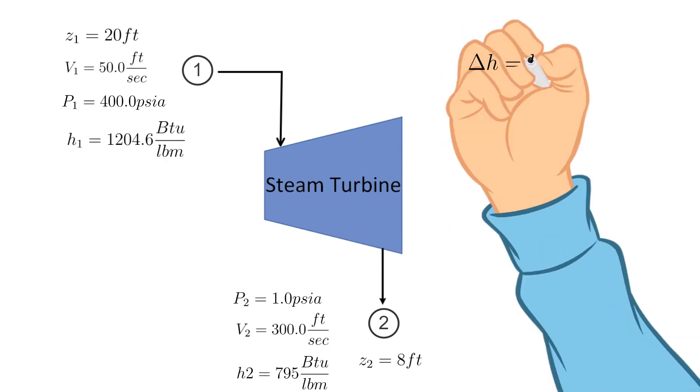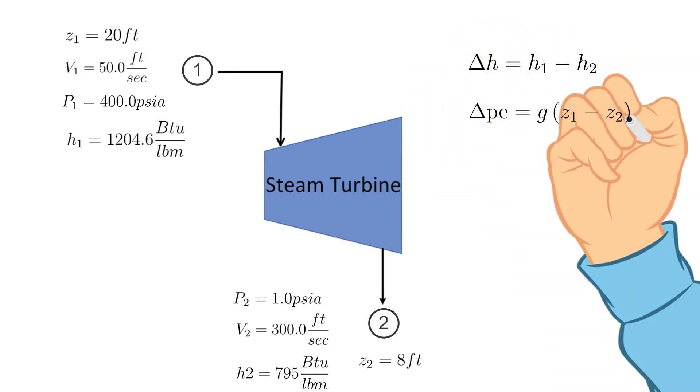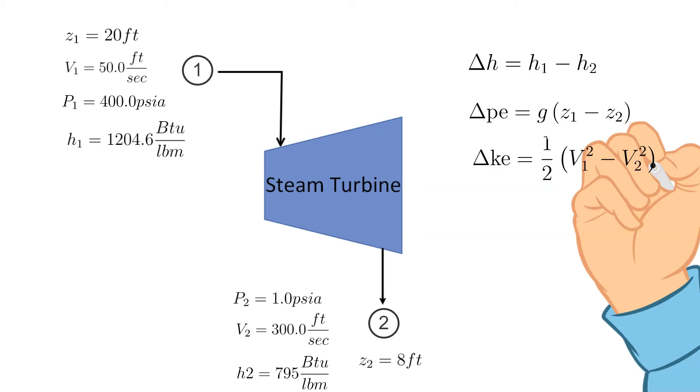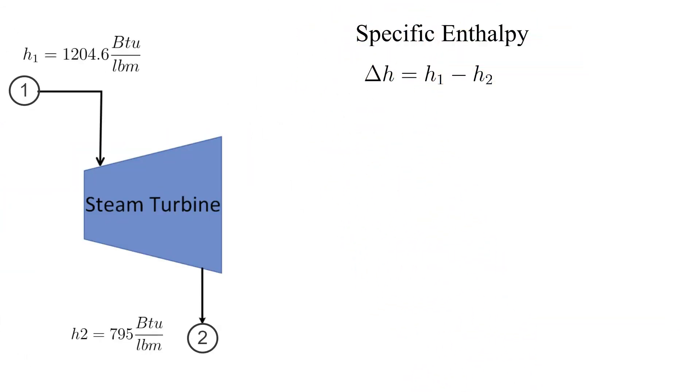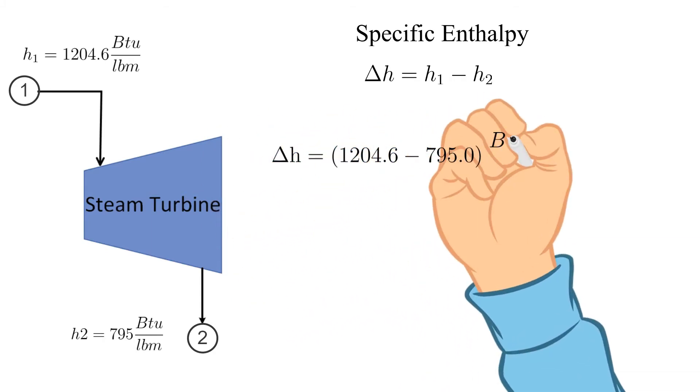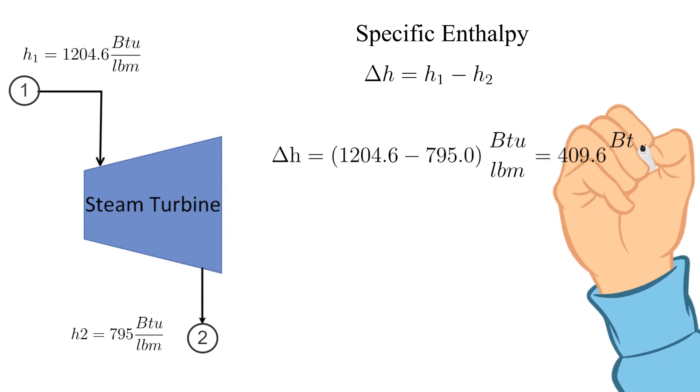The equations to calculate the changes in specific enthalpy, potential energy, and kinetic energy are shown here. Let's start with specific enthalpy. This is an easy one since the provided data is already in the desired units of BTU per pound mass. Plugging in the numbers we get 409.6 BTU per pound mass.